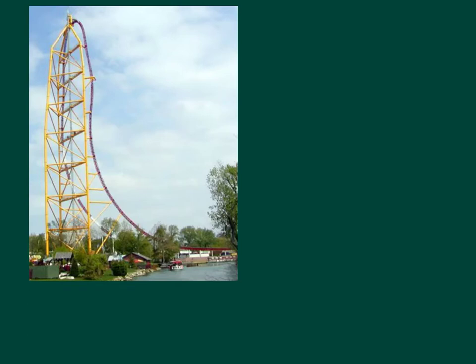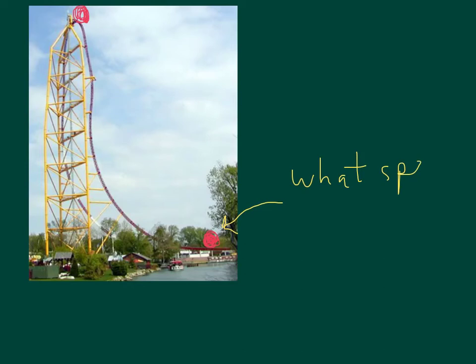The way this ride actually works is you start at the bottom, and there is a device which pushes the car to give it an initial speed, which gets it just to the top of the hill, and then it comes down the other side. So there's your starting point — all of your speed has to be given at that point right there. There's no mechanism after that to get you to the top. So what we want to do is figure out what speed you need at the bottom for the cart to just make it to the top and come down the other side.